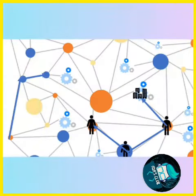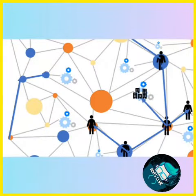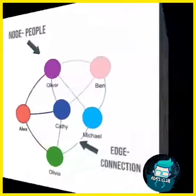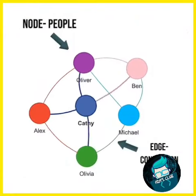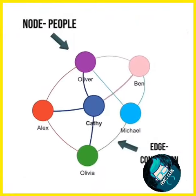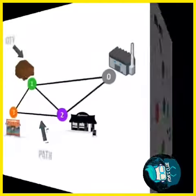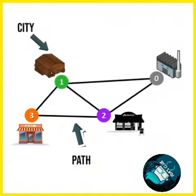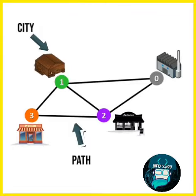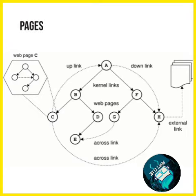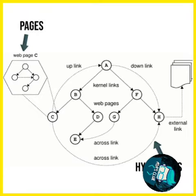Graphs represent relationships between entities in various domains. For example, in a social network, nodes represent people and edges represent connections. In transportation networks, nodes can represent cities and edges can represent routes. Websites can also be represented as graphs, with pages as nodes and hyperlinks as edges.